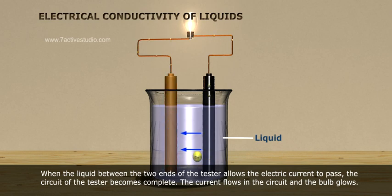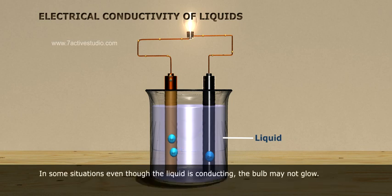The current flows in the circuit and the bulb glows. In some situations, even though the liquid is conducting, the bulb may not glow.